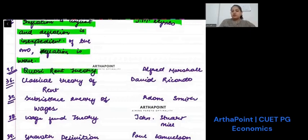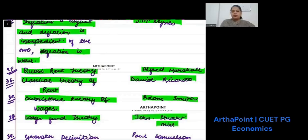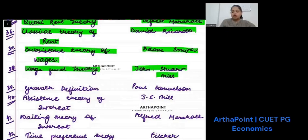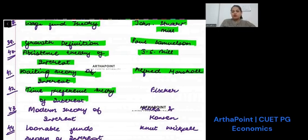Quasi-rent theory was given by Marshall. Classical theory of rent was given by Ricardo. Subsistence theory of wage was given by Adam Smith. Wage fund theory was given by John Stuart Mill. Growth definition was given by Paul Samuelson. Abstinence theory of interest was given by J.S. Mill. Waiting theory of interest was given by Alfred Marshall. Time preference theory of interest was given by Fischer. Modern theory of interest was given by Hicks and Hansen.